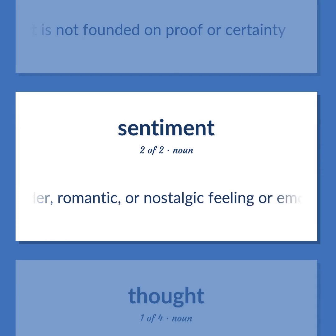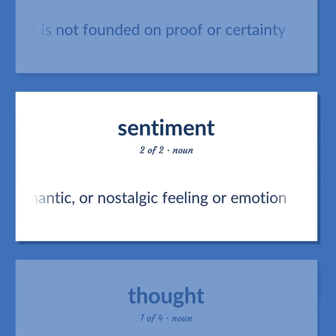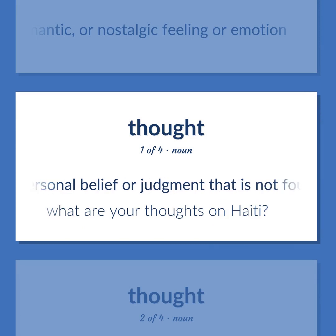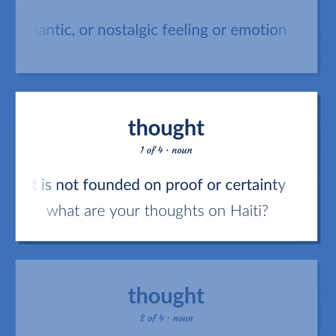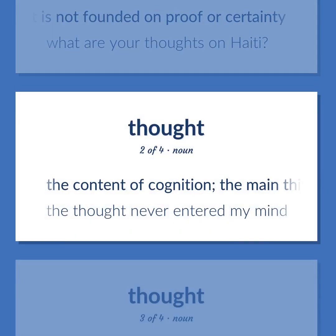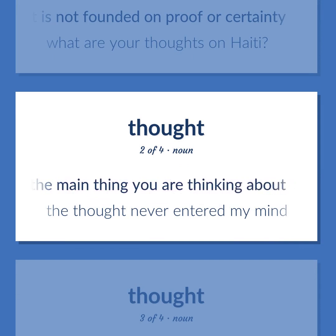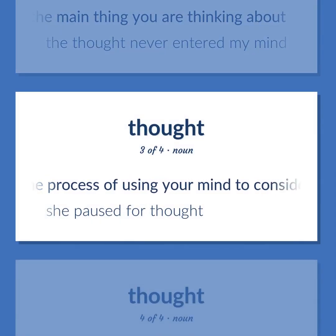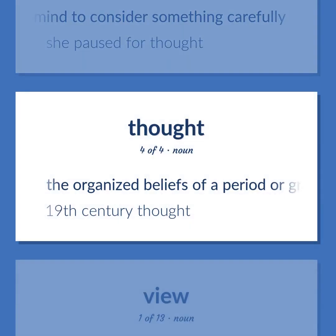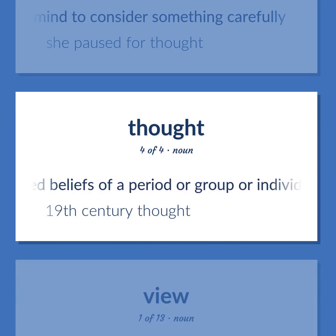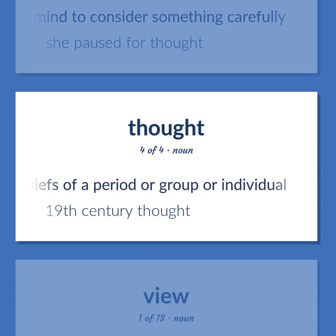'Sentiment': Tender, romantic, or nostalgic feeling or emotion. 'Thought': A personal belief or judgment not founded on proof or certainty. Example: 'What are your thoughts on Haiti?' The content of cognition — the main thing you are thinking about. Example: 'The thought never entered my mind.' The process of using your mind to consider something carefully. Example: 'She paused for thought.' The organized beliefs of a period, group, or individual. Example: '19th century thought.'